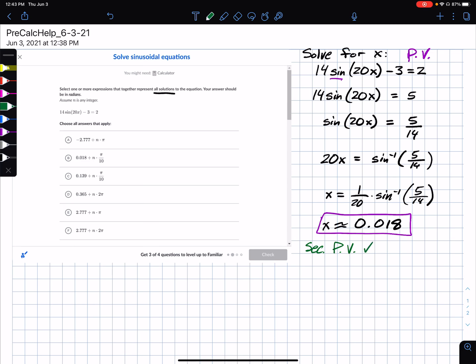We have to go find the secondary principal value. So the algorithm for this, a little formula for finding the secondary principal value is basically this. It's going to be half the period minus the principal value.